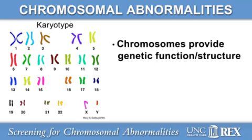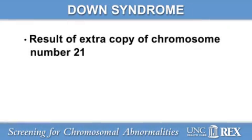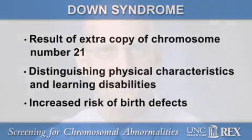Chromosomes are found in all cells in the body. They provide the genetic instructions for cell function and structure. If they're not formed correctly, or if there are missing or extra chromosomes, the result can be a physical or functional abnormality in the baby. Down syndrome is the most common, well-known chromosomal abnormality among live-born children. It results from an extra copy of chromosome number 21. These children have distinguishing physical characteristics, as well as significant learning disabilities and an increased risk of birth defects. Most chromosomal abnormalities occur by chance, which is heightened by factors such as increasing maternal age or a prior affected child.